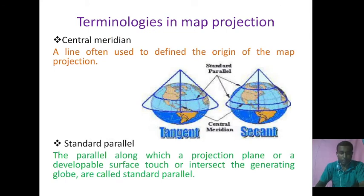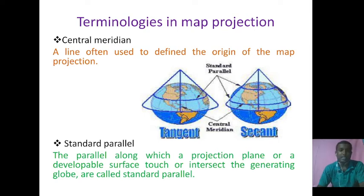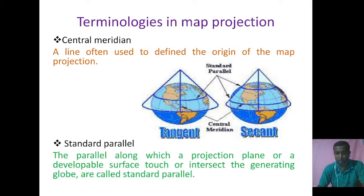Now I am talking about the central meridian. For a given longitudinal extension, it refers to that meridian which lies exactly at the median or middlemost position of the extension. It has only constructional importance and is normally drawn as a straight line. The mesh of graticules on one side of the central meridian is in fact the mirror image of the other side. You can see the central meridian here in the given image.